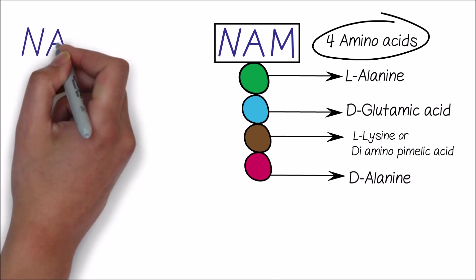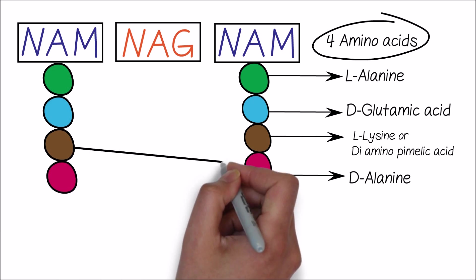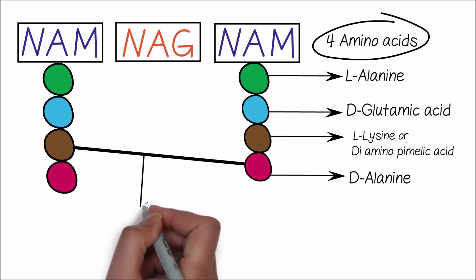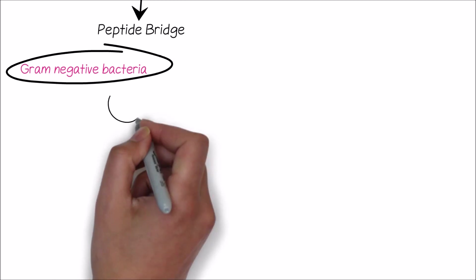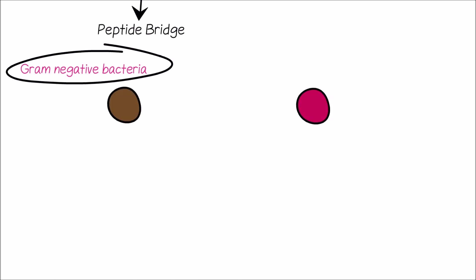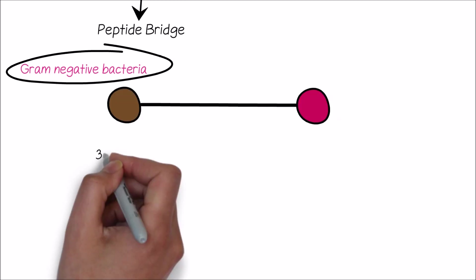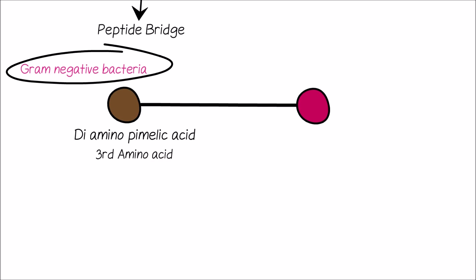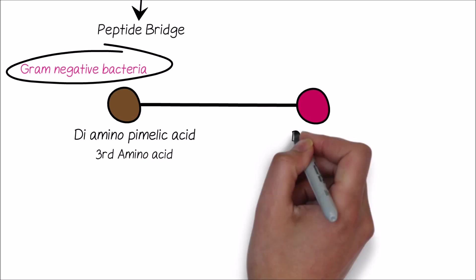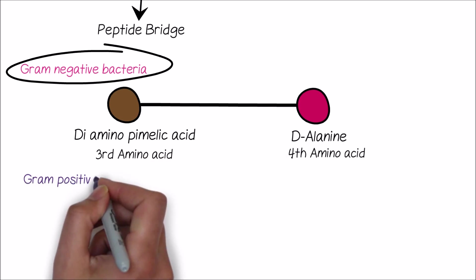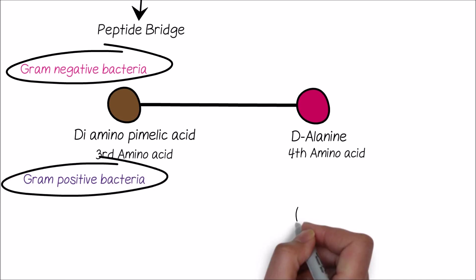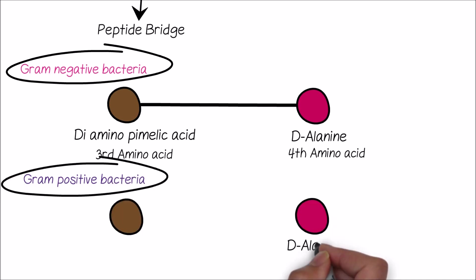The tetrapeptide side chains of two adjacent murein units are linked by a peptide bridge. In gram-negative bacteria, this cross-link is formed directly between the third amino acid, which is diaminopimelic acid, and D-alanine, which is the fourth amino acid. In gram-positive bacteria, this cross-link is formed between D-alanine and L-lysine by five glycine amino acids.